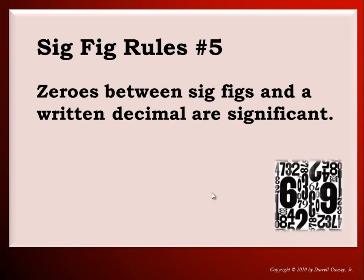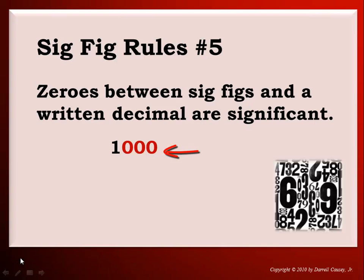Significant figure rule number five: zeros between significant figures and a written decimal are significant. Here's an example — those zeros are not significant. But now they are. The zeros weren't significant and now they are. One thousand without a decimal point at the end is not significant. But if we put a decimal point back — just like magic, voilà — those three zeros are now significant.